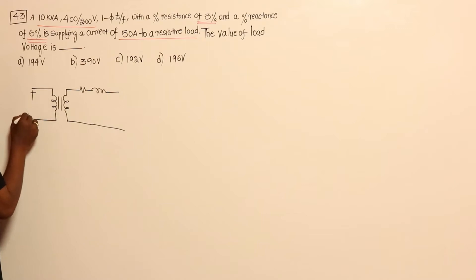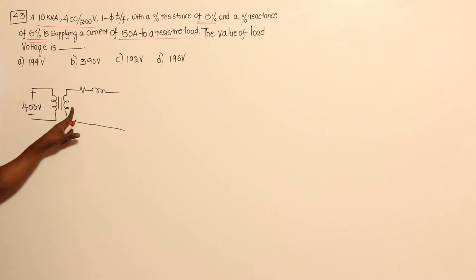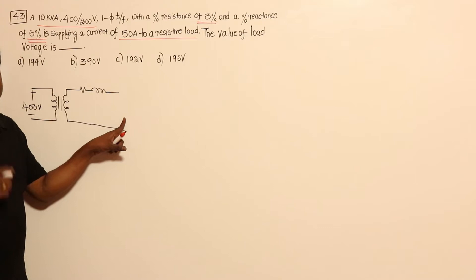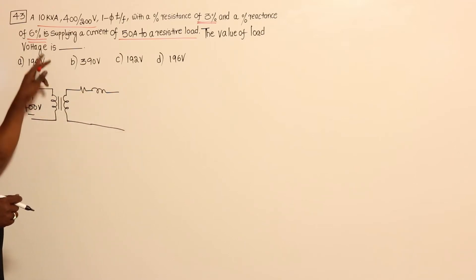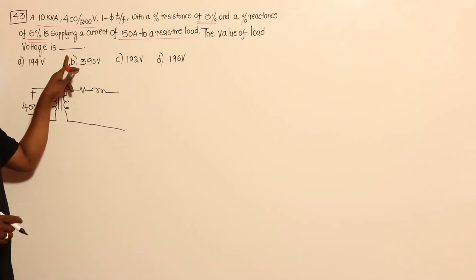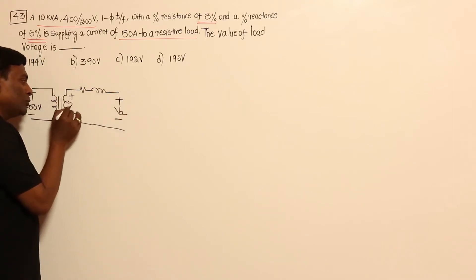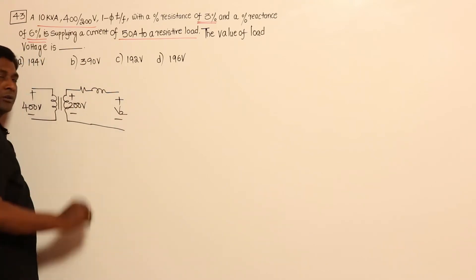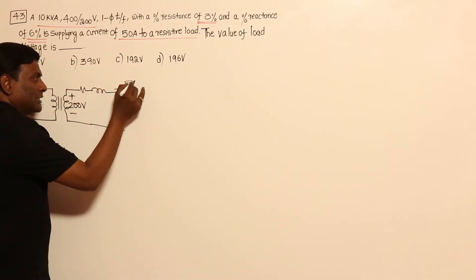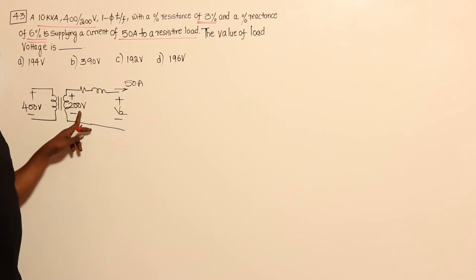Here, 400 volts is given and 200 volts is given. The key question is: is this 200 volts the induced voltage or the load voltage? Because depending on that, our equation will vary. The problem says supplying a current of 50 amperes and asks for the value of load voltage. So the load voltage is what we need, meaning the internally induced voltage should be 200 volts.